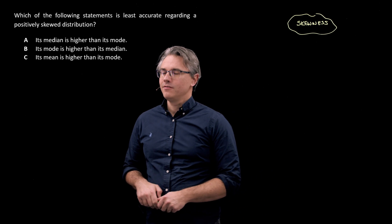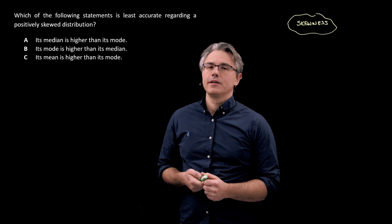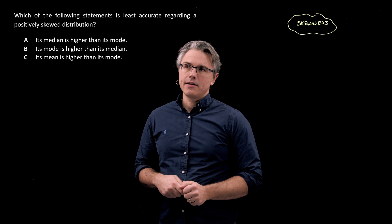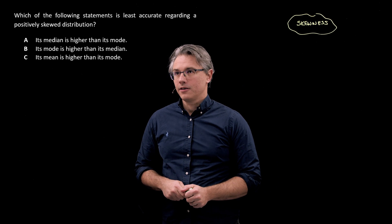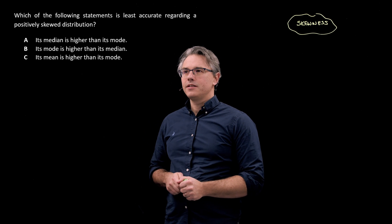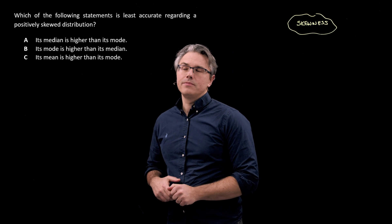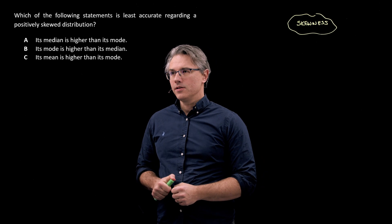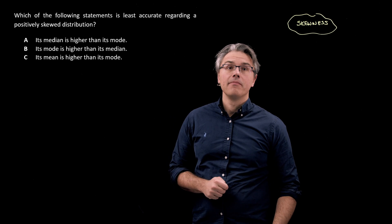So this is the short theoretical question which I want us to tackle. Which of the following statements is least accurate regarding a positively skewed distribution? Its median is higher than its mode, its mode is higher than its median, or maybe its mean is higher than its mode.